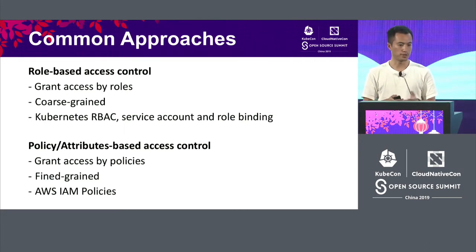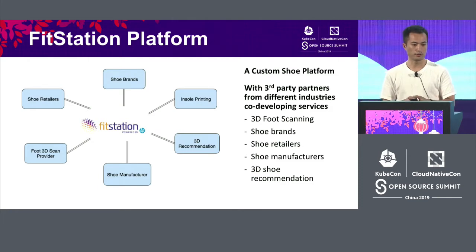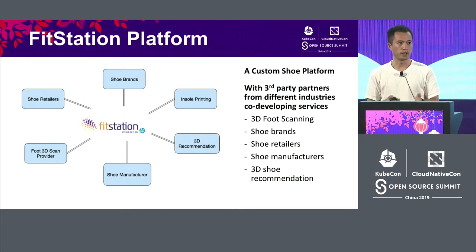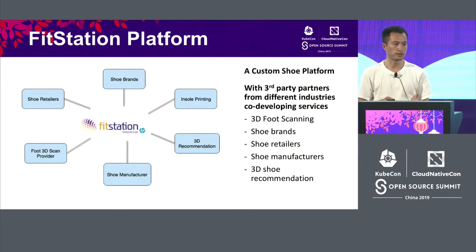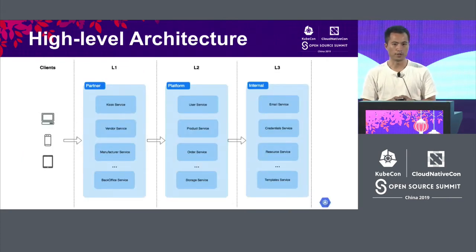We are using both of these approaches in our current project. A little background: it's called the FreeStation platform, which is a customer-facing platform. We have many third-party partners developing their services on our platform using our platform API. The services built by these partners are running in the same Kubernetes cluster as our platform services, so it's a challenge for platform network security and access control.